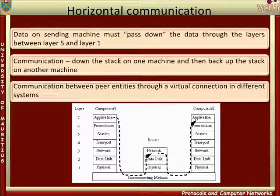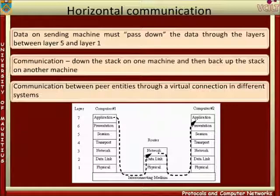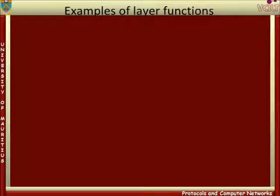The communication between peer entities through a virtual connection in different systems is sometimes referred to as horizontal communication. There are several functions that can be performed at one or more of the OSI layers.